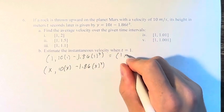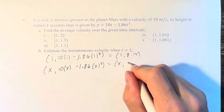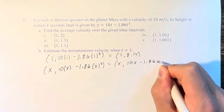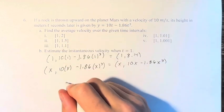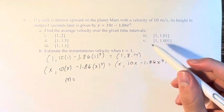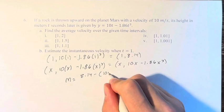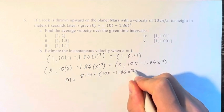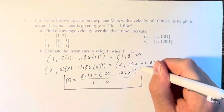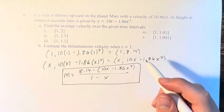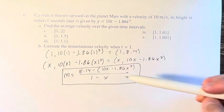This is 1 and then calculating this you get 8.14, and for whatever other x you have it's 10x minus 1.86x cubed. Once you have this, the slope, which is going to be the average velocity between these two points, is going to be the change in y. So 8.14 minus the second y value, 10x minus 1.86x cubed, over 1 minus x.